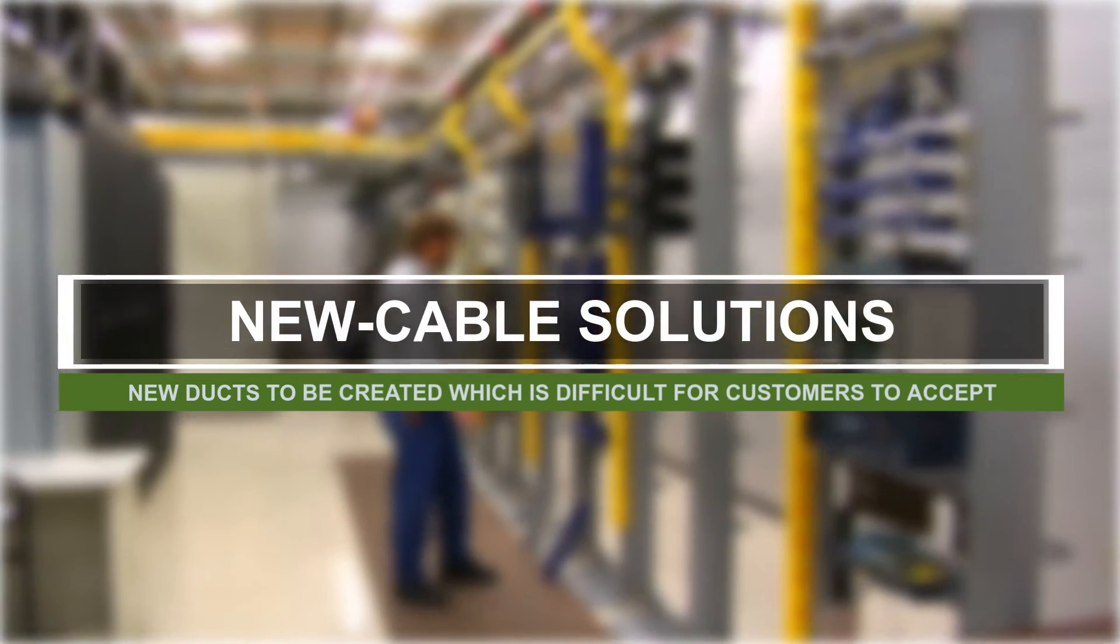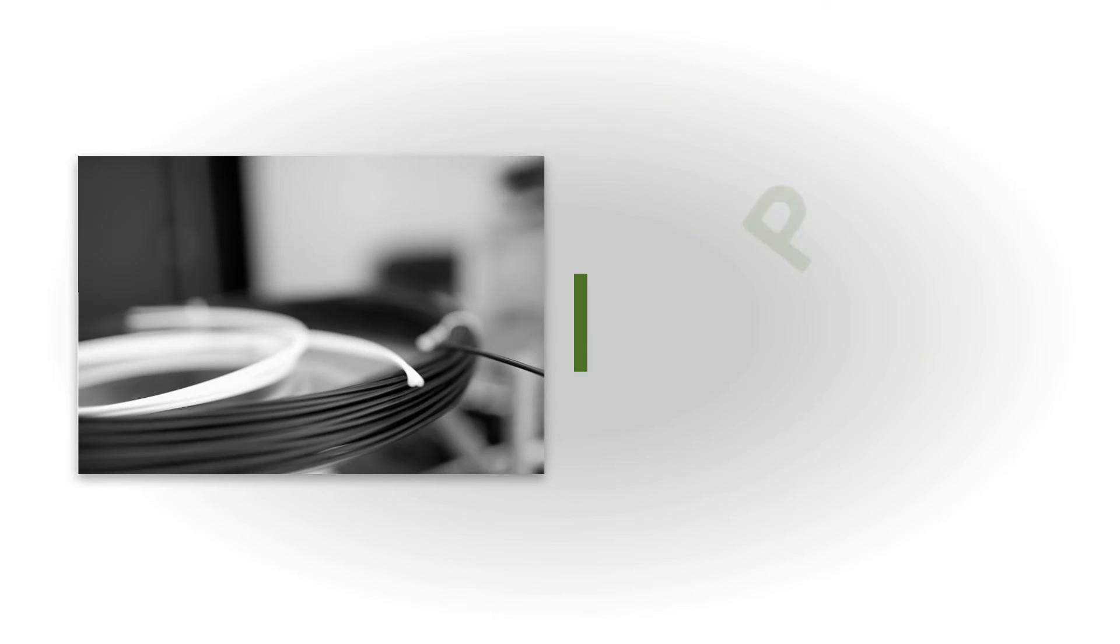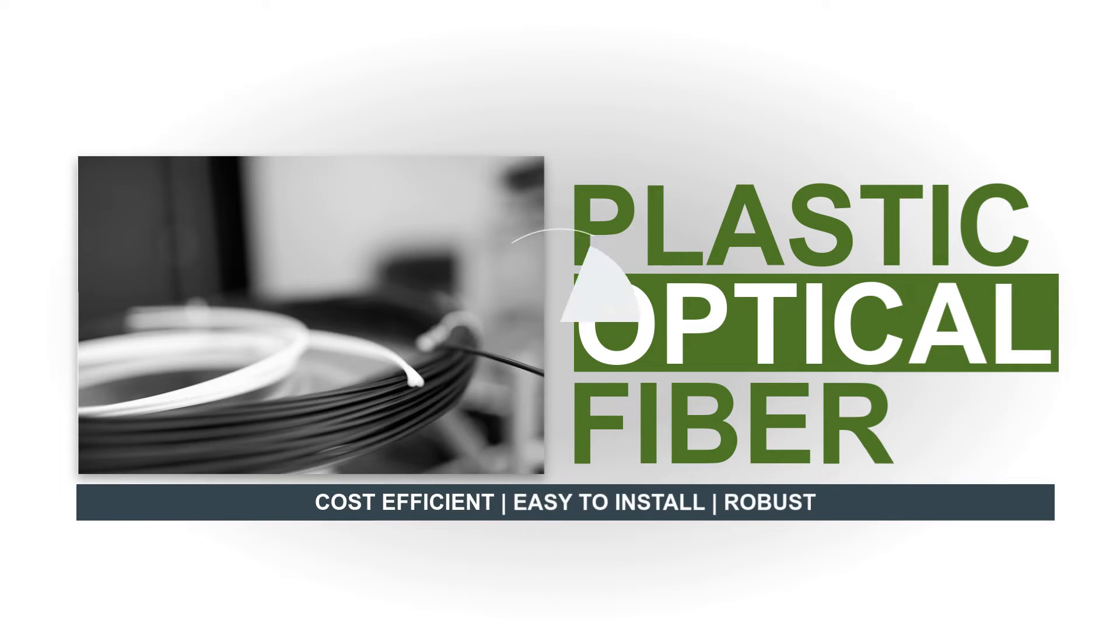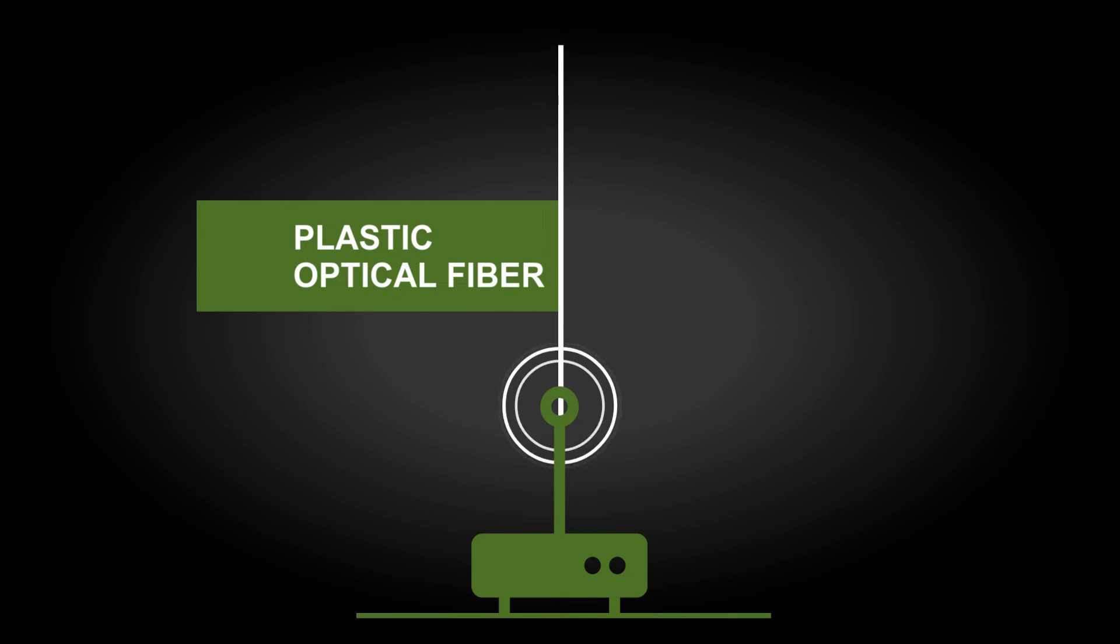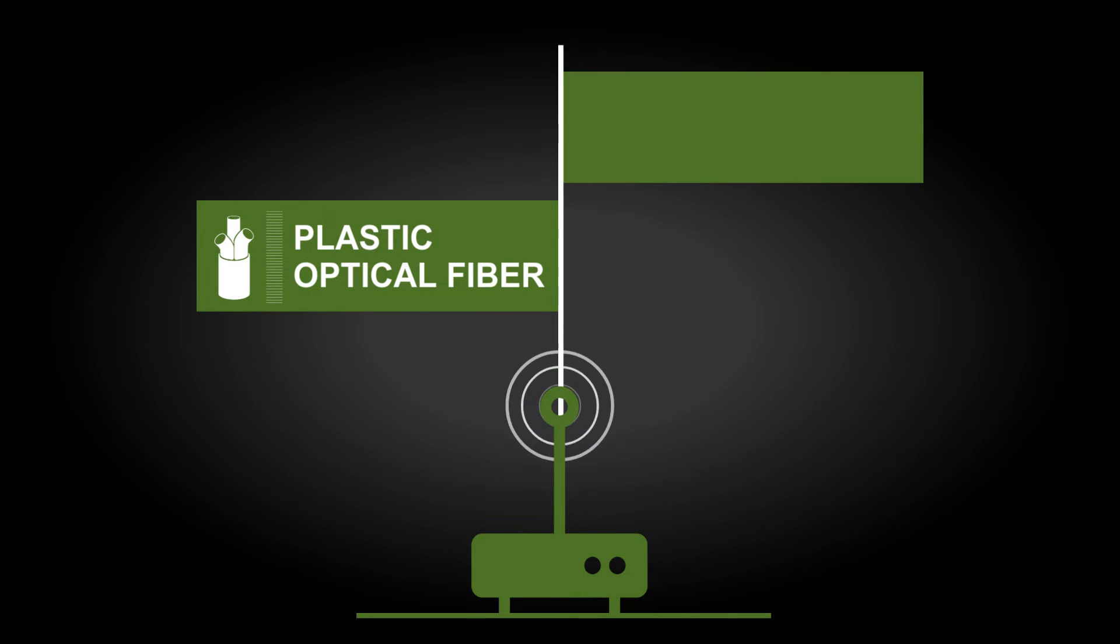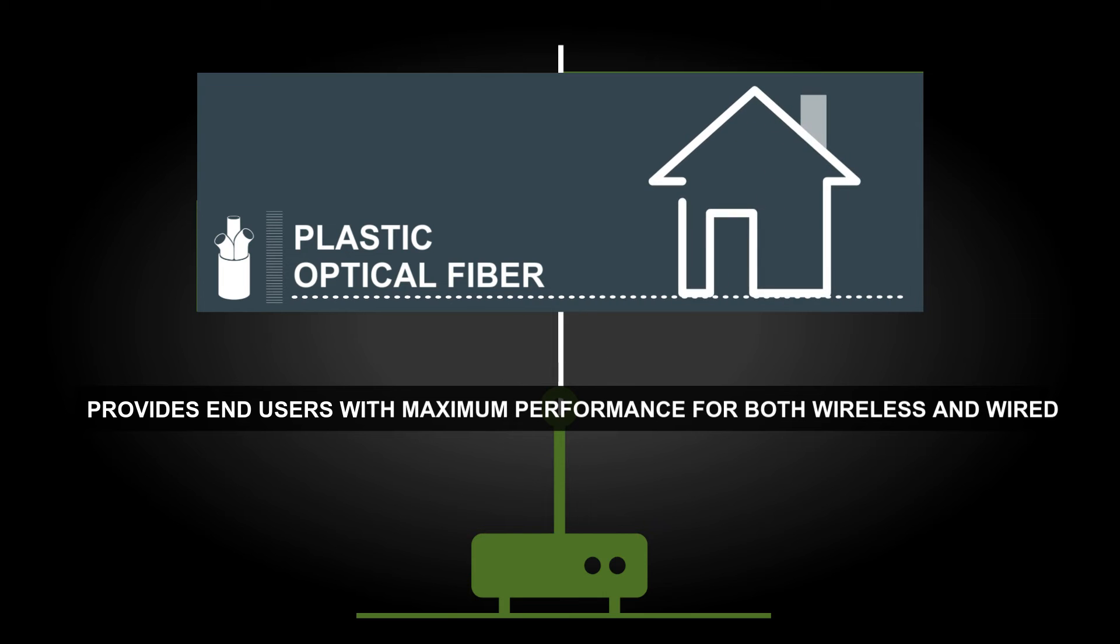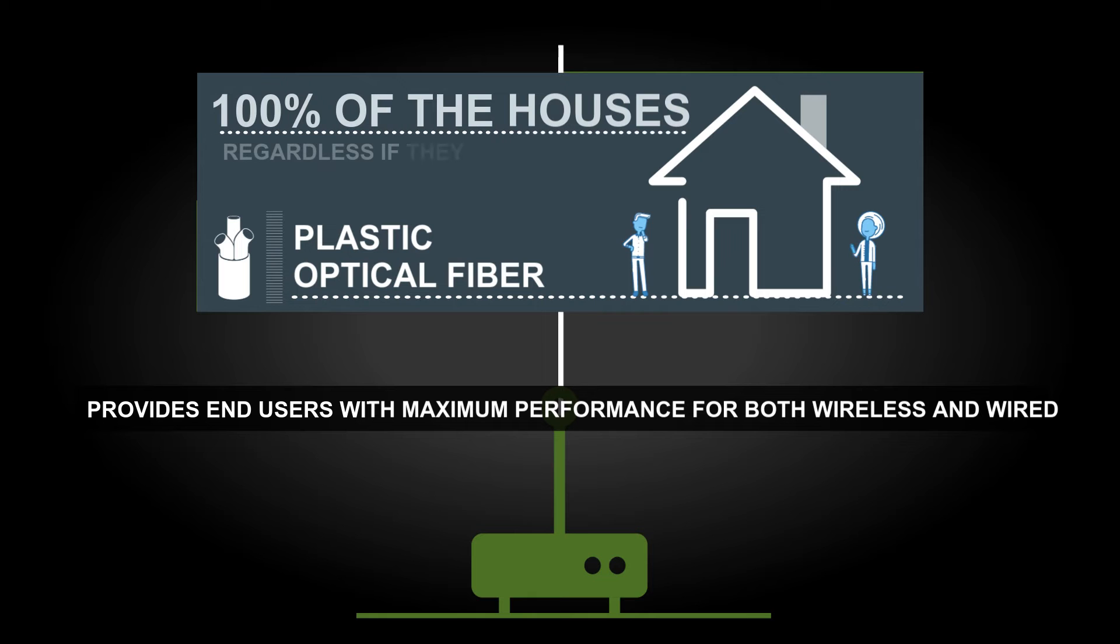Introducing plastic optical fiber. Plastic optical fiber is cost-efficient, easy to install, and robust. A plastic optical fiber backbone inside the home in combination with Wi-Fi access points is ideal, since this provides end users with maximum performance for both wireless and wired connectivity throughout the house. Plastic optical fiber reuses any existing conduits in the home, making these cables invisible to customers.